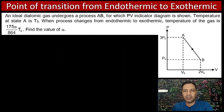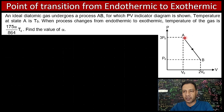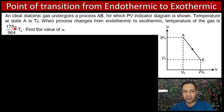In this challenging problem series of physics, here is yet another very challenging problem from thermodynamics. The question states: an ideal diatomic gas undergoes a process AB, for which a PV indicator diagram is shown. Temperature at state A is T0. When the process changes from endothermic to exothermic, the temperature of the gas is 175α/864 · T0. Find the value of α.